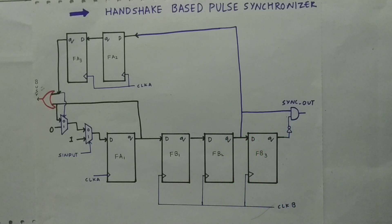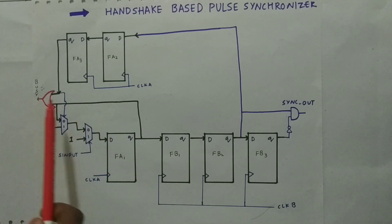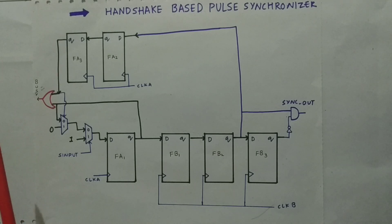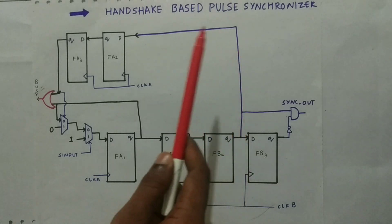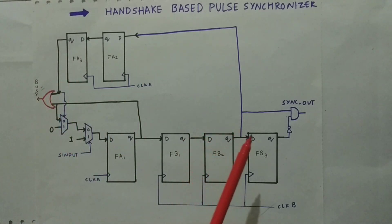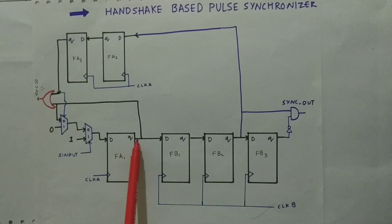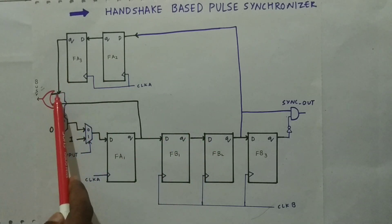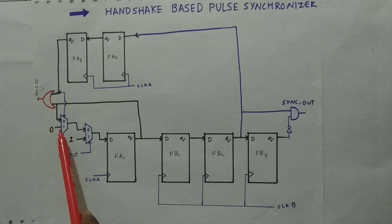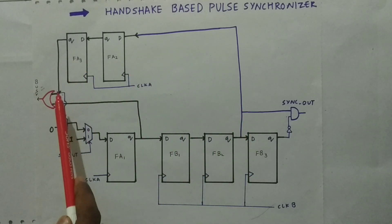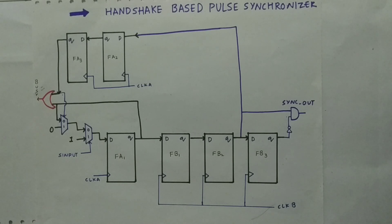The busy signal is asserted high whenever we are sending the level to the clock B domain — specifically when FA1Q is 1, busy is asserted. To de-assert busy so FSM-A can send another pulse, we send a handshake back. When FB2Q is 1, we synchronize this back to clock A domain and set the MUX select to 0, driving the feedback to 0. However, the input is still 1, so we must wait for the output to propagate back. Until busy goes low, FSM-A cannot generate the next pulse signal.